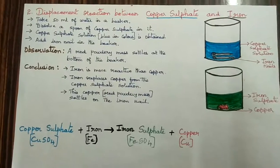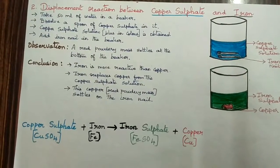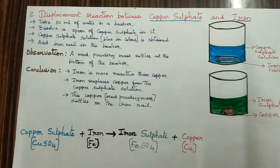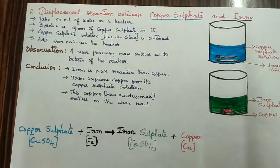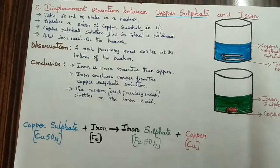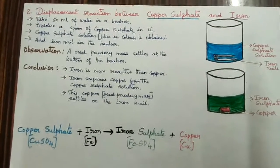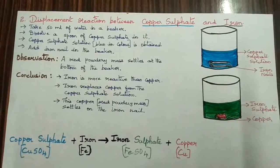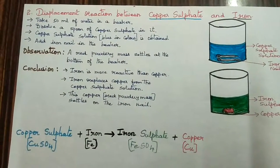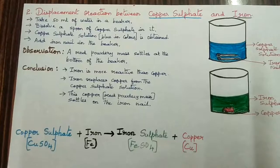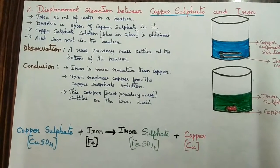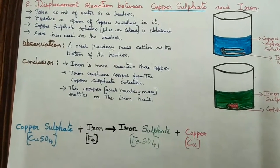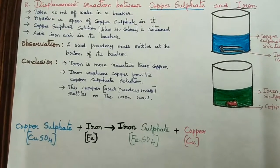Let's study the second displacement reaction. This reaction takes place between copper sulfate and iron. The procedure is to take 50 ml of water in a beaker. Dissolve a spoon of copper sulfate in it. Copper sulfate solution, which is blue in color, is obtained. Add iron nails in the beaker.